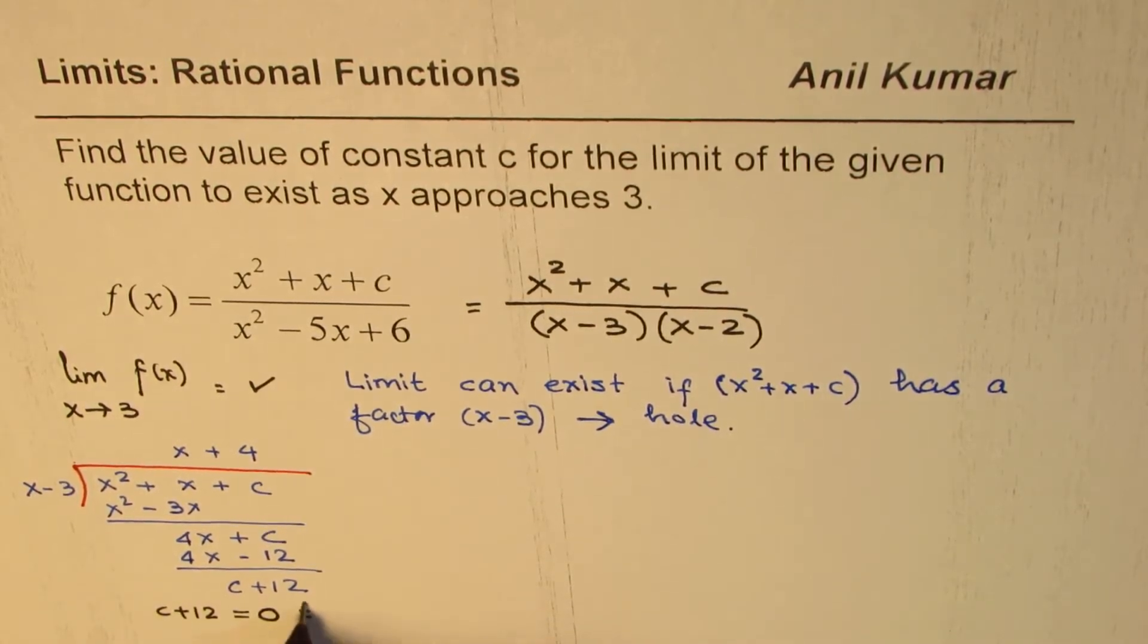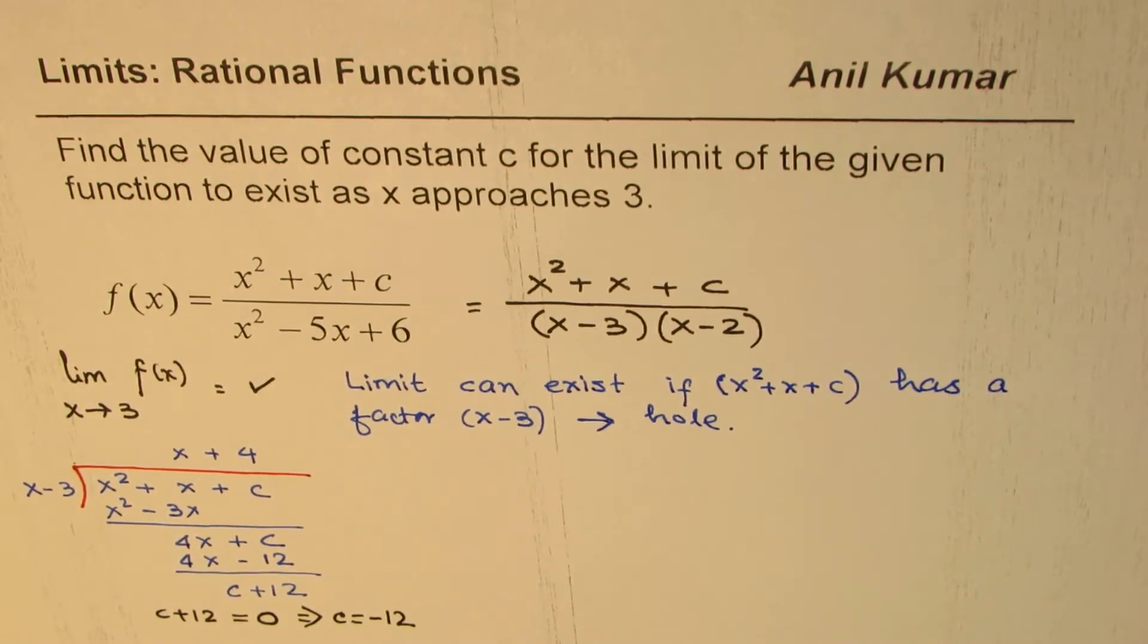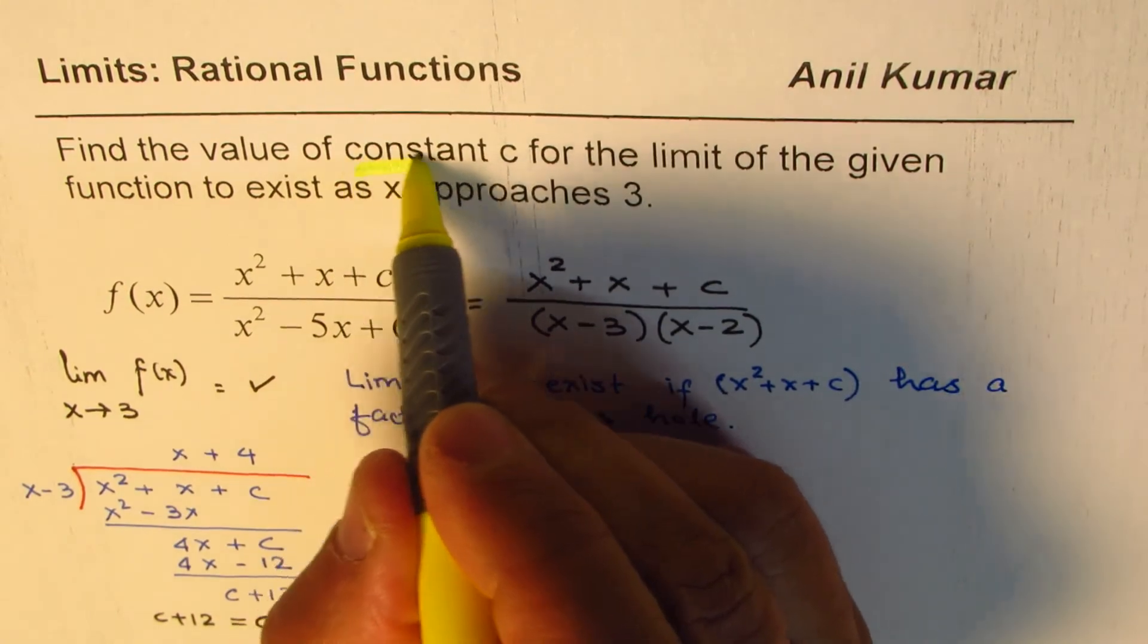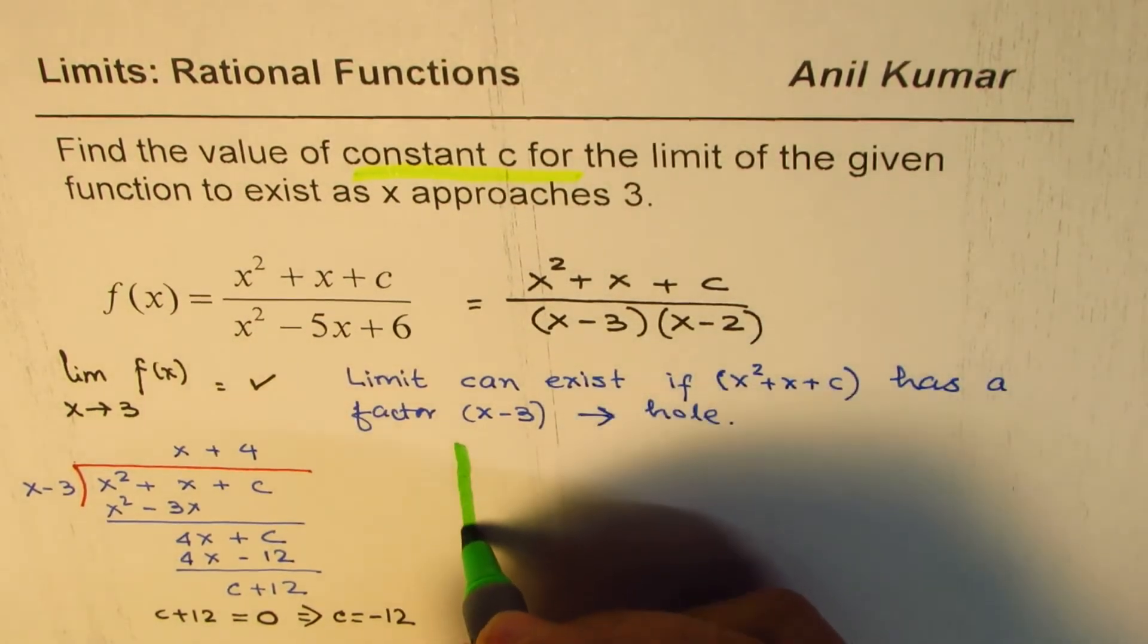So this implies that c is equal to minus 12. So this is one way of solving. I hope you understood the concept. So this means that c should be minus 12. And that is how we could find the value of the constant c. So now I hope the question makes some sense to you. This is one way of doing it. So we found the value c as minus 12.